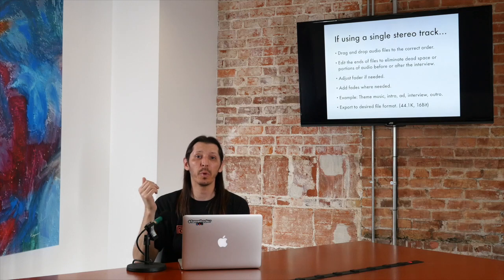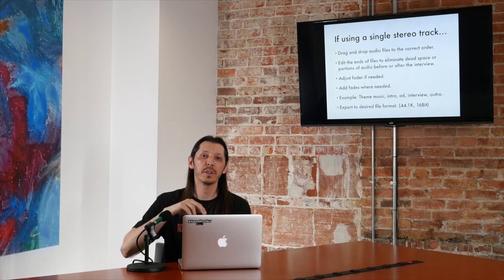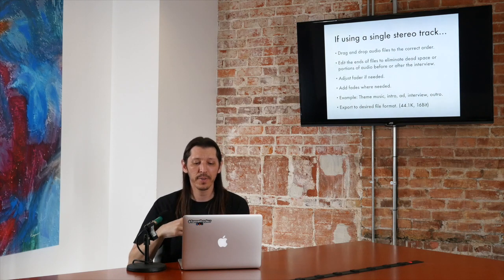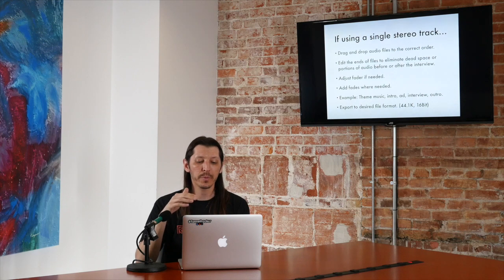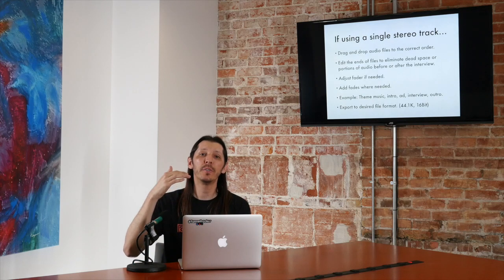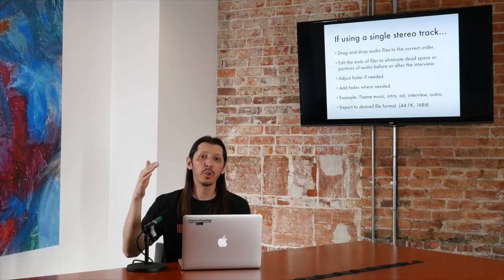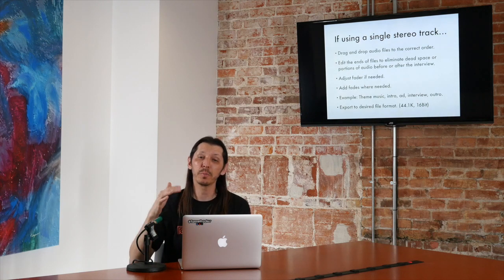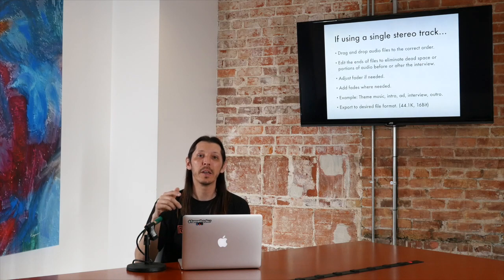After that you would just export it. When you export, you're going to be able to pick your file type — an MP3 or a .wav — and you're also going to be able to pick the specs for it. If you recorded at a higher sampling rate, you'll be able to change that when you export. Although for the most part, you're going to want to bounce it — bouncing and exporting are kind of interchangeable — to 44.1K, 16-bit, because that's the same quality as a CD.